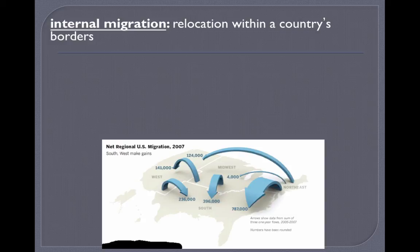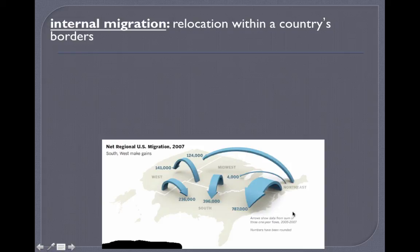Migration doesn't only mean moving from one country to another. If you moved from one part of the US all the way to Miami, you are an internal or domestic migrant, because you've relocated within a country's borders. A US map as of 2007 shows net regional migration: people are heading in the hundreds of thousands to the south, and also moving west, with very few choosing the Midwest.